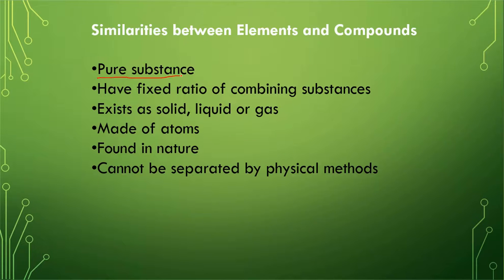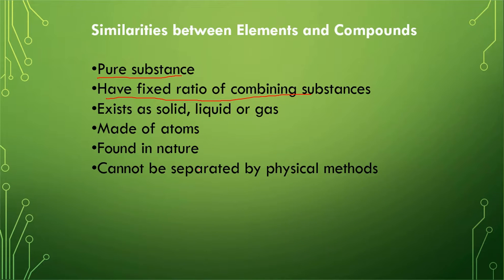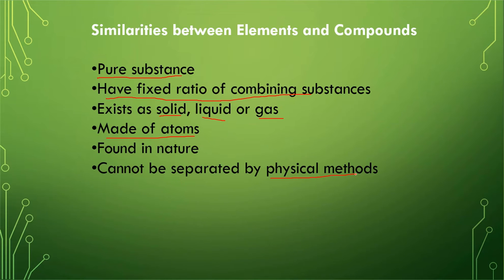Now let's look at the similarities between elements and compounds. They are both pure substances — elements are made up of atoms, and compounds are made up of their combining elements. They both have a fixed ratio of combining substances: for instance, two hydrogen atoms and one oxygen atom combine to form one molecule of water. Elements can exist as solid, liquid, or gas, and so can compounds. They both cannot be separated by physical methods such as filtration or crystallization.